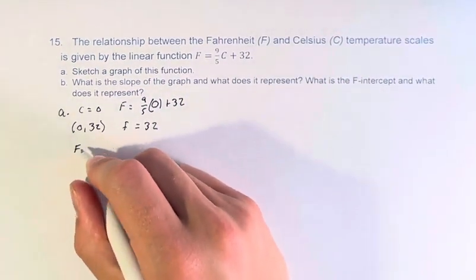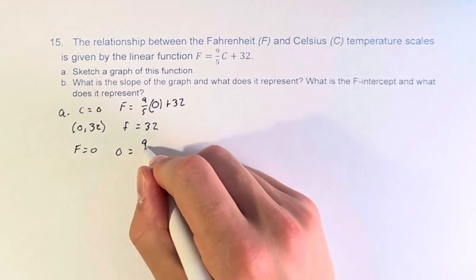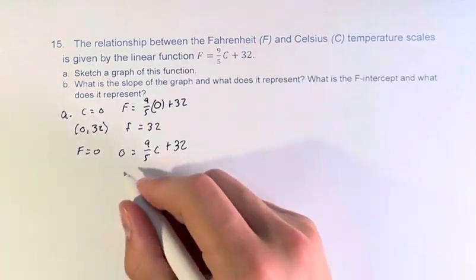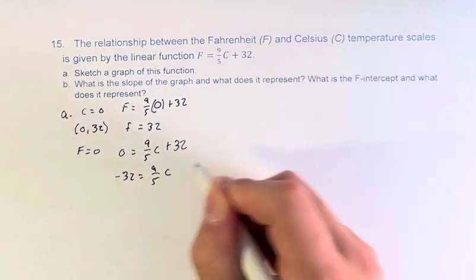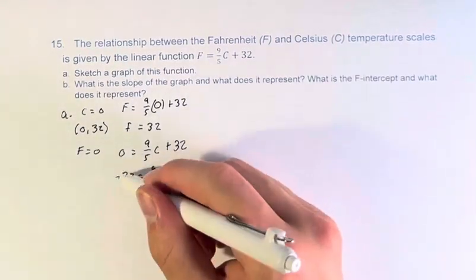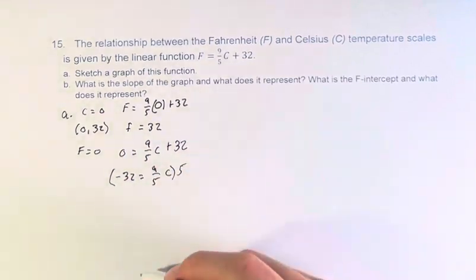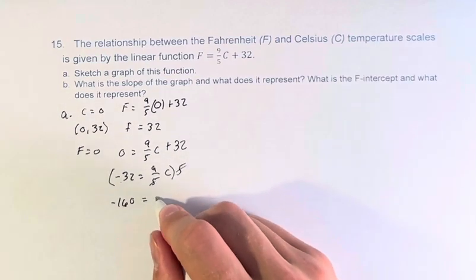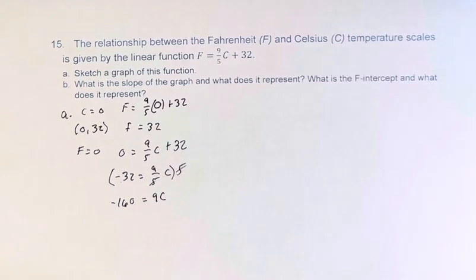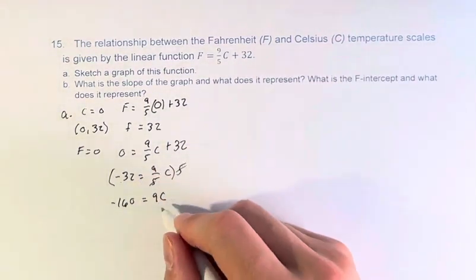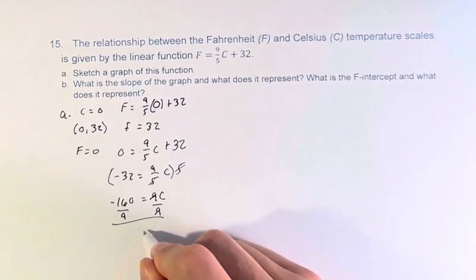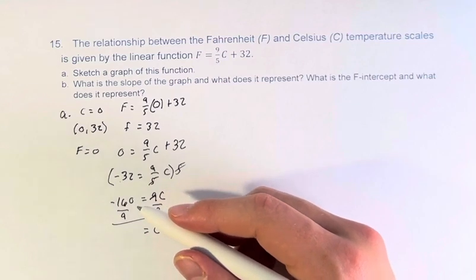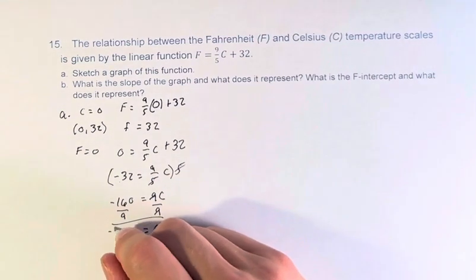What about when F is 0? Then 0 equals 9/5 C plus 32. Negative 32 equals 9/5 C. You can multiply both sides by 5. Negative 32 times 5 is negative 160, and on this side they cancel to get 9C. Divide by 9 to get C equals negative 160 divided by 9.